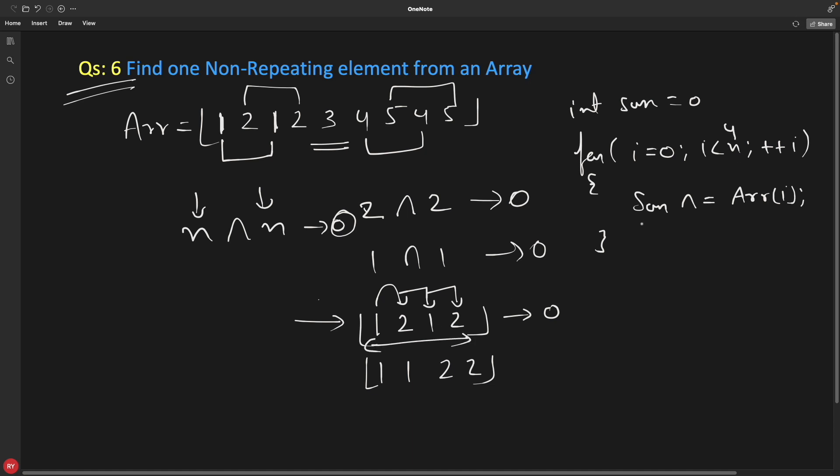We do sum XOR equals array of i. The result after completing this for loop, your sum would be 0 if your array is this or it is this.